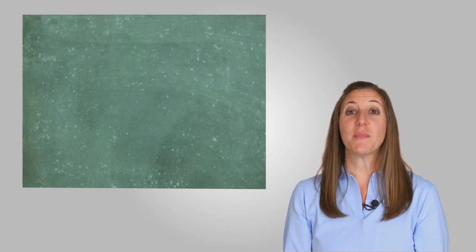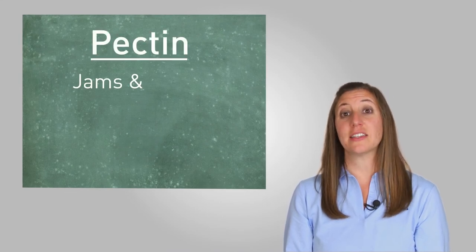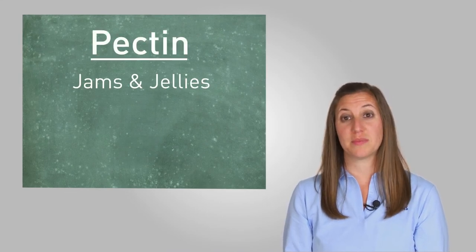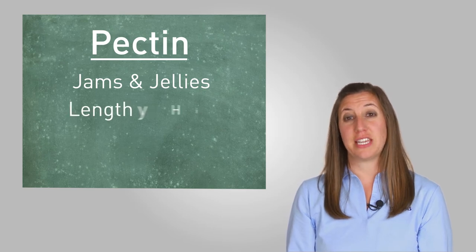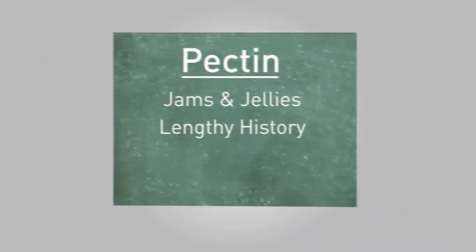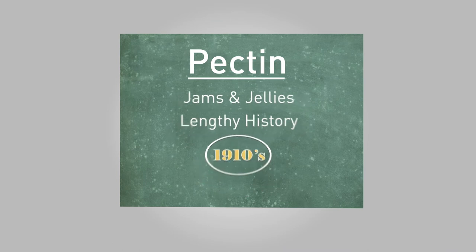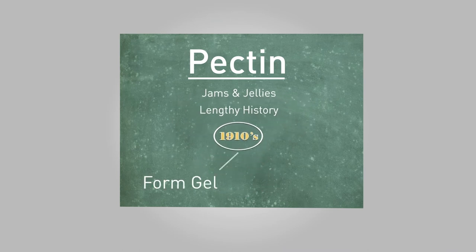Pectin is fairly recognizable to most people because it's an ingredient that's been in most family kitchens for generations. It's commonly used as a gelling agent for jams and jellies and has significant comfort level with most people. Pectin has a lengthy history dating back to the early 19th century, becoming a more prominent ingredient in the market after the 1910s. Its natural ability to form gels and add texture has made it both a household name and a go-to ingredient in the food industry.